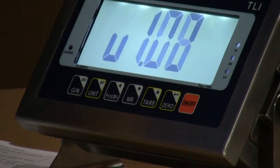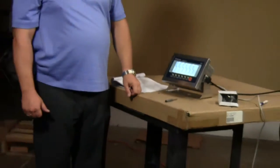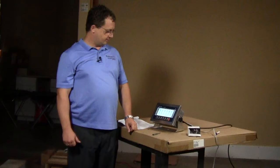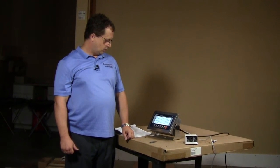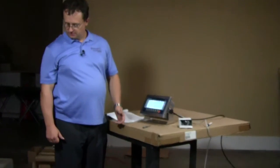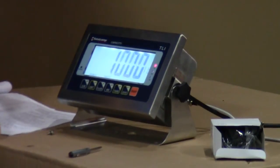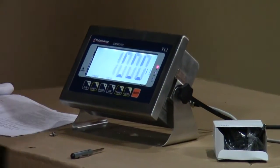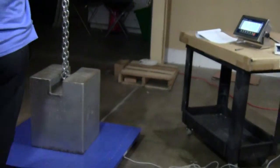The scale tells us, hey, I passed the test. Now, let's see, when it recycles, what will it show? It will show 1,000 pounds. So the calibration, as far as with the 1,000 pound test, is done.